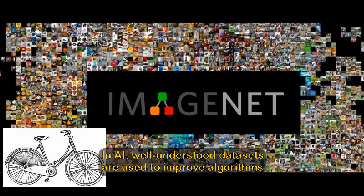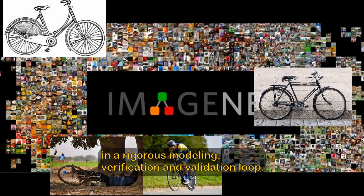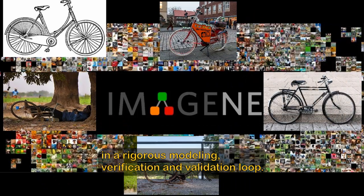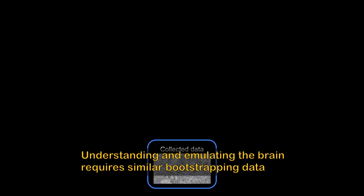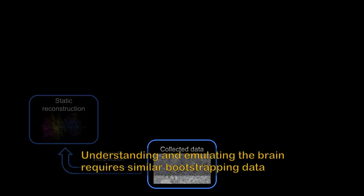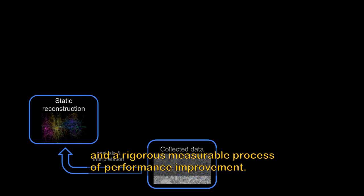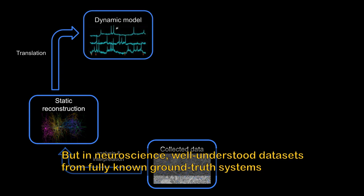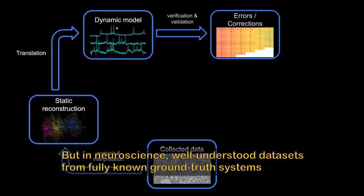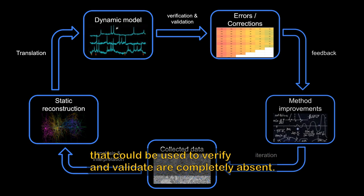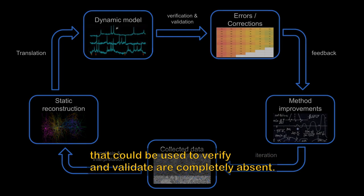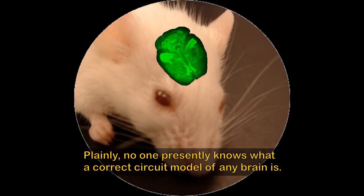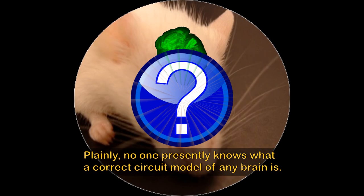In AI, well-understood data sets are used to improve algorithms in a rigorous modeling, verification, and validation loop. Understanding and emulating the brain requires similar bootstrapping data and a rigorous measurable process of performance improvement. But in neuroscience, well-understood data sets from fully known ground-truth systems that could be used to verify and validate are completely absent. Plainly, no one presently knows what a correct circuit model of any brain is.